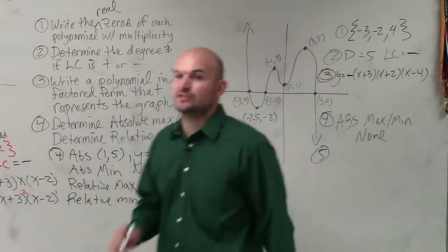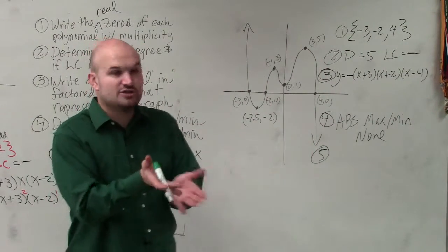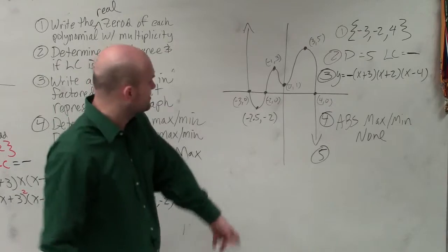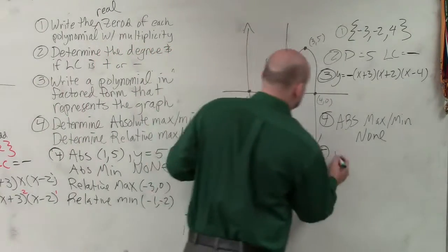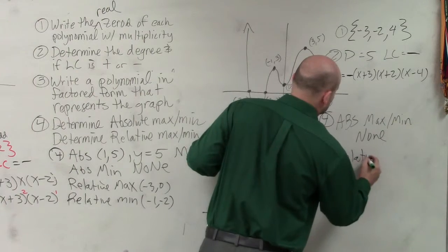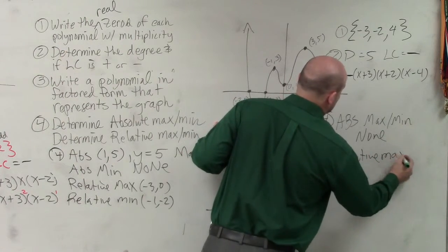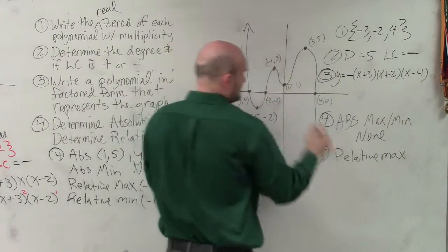Number 5, let's look at relative max. What are some other turning points that represent maximum points? Well, we have negative 1, 3, and 3 comma 5. So our relative max is negative 1, 3, and 3 comma 5.